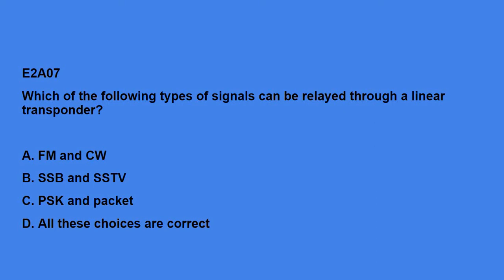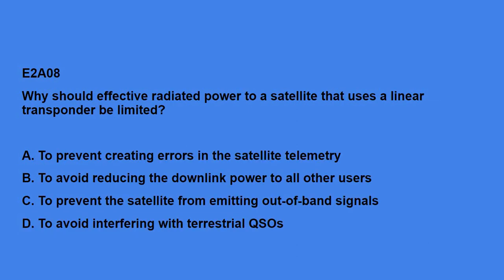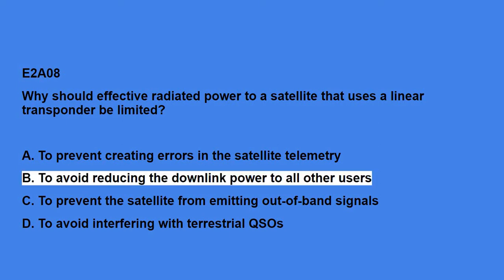E2A07: Which of the following types of signals can be relayed through a linear transponder? The answer is all of the choices are correct — FM and CW, SSB and SSTV, as well as PSK and packet. E2A08: Why should effective radiated power to a satellite that uses a linear transponder be limited? To avoid reducing the downlink power to all other users.